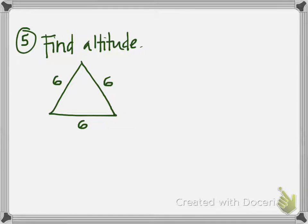Number 5 asks for the altitude of this triangle. All sides are equal, so it's equilateral with all angles 60°. The altitude in an equilateral triangle is also the median, breaking the base into two equal halves of 3. I know the angles are 60° at the base and 30° at the top. Since I know two sides of this right triangle (3 and 6), I can use Pythagorean theorem, or since it's a 30-60-90, I can use that ratio — I'll do both.